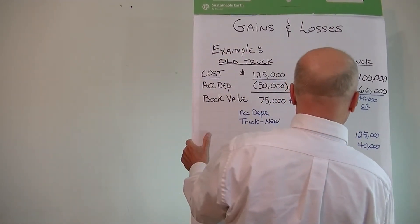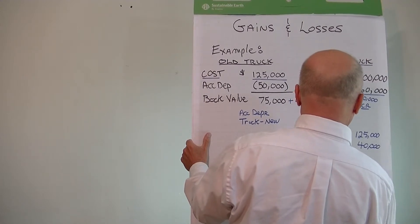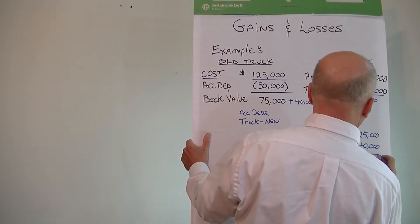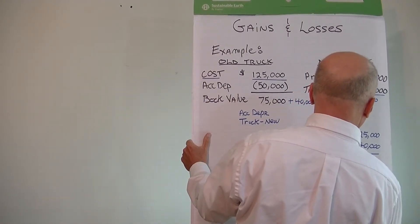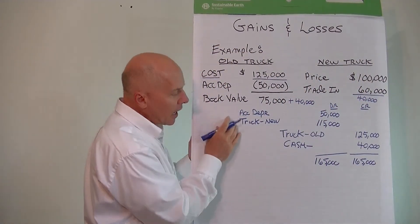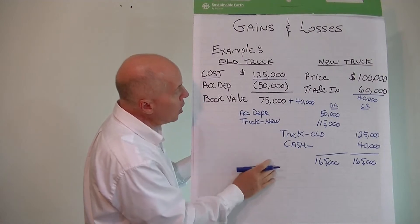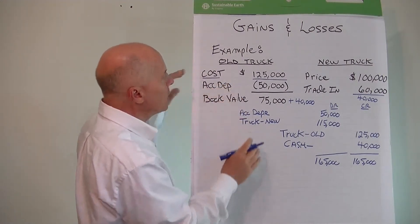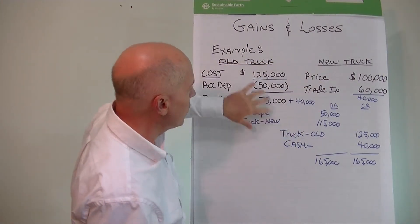So our debits total up to $165,000. Credits total up to $165,000. Debits have to equal credits. So this would be the actual accounting transaction that we would post when we trade in the old truck and get the new truck on the books.